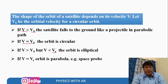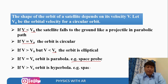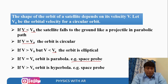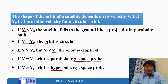If v equals the escape velocity vₑ, the orbit is a parabola — for example, a space probe. If the velocity is greater than the escape velocity, the orbit is a hyperbola. So depending upon the speed, the satellite can move in a circular, elliptical, parabolic, or hyperbolic orbit.